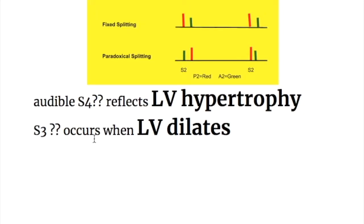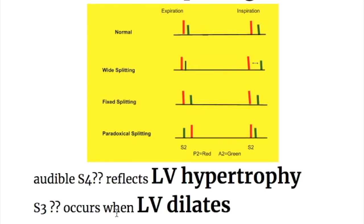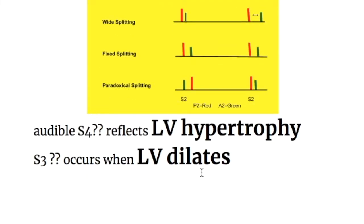The third heart sound occurs when the left ventricle dilates. So in aortic stenosis, there is reversed or paradoxical splitting of the second heart sound; the third heart sound occurs when there is LV dilatation; and the fourth heart sound occurs when there is left ventricular hypertrophy.